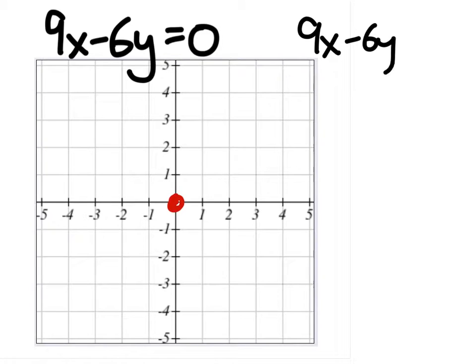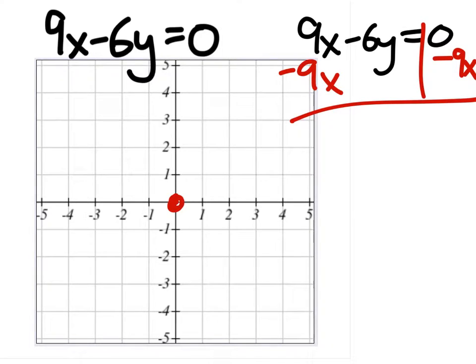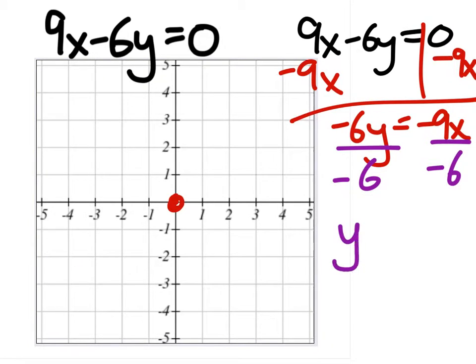We've got 9x minus 6y equals 0. So I'll subtract 9x from both sides. 0 minus 9x. So I've got negative 6y equals negative 9x. And then we've got to divide by negative 6 so that the y is by itself. And we get y equals... We've got these two negatives, so we can get rid of those, and that becomes a positive.